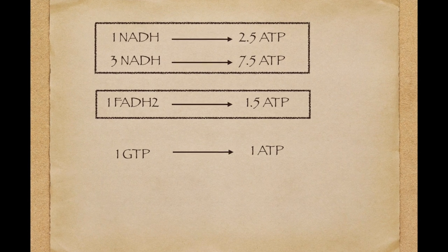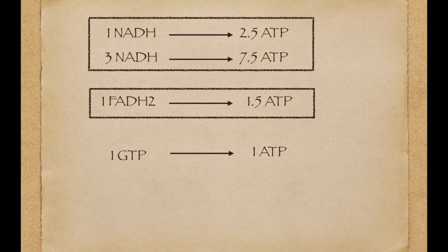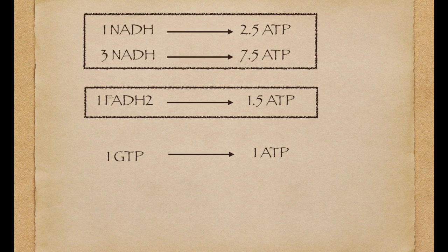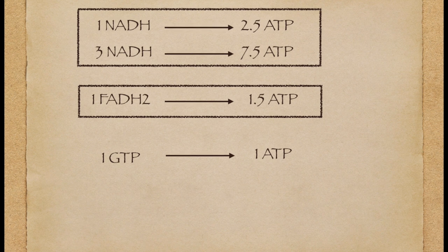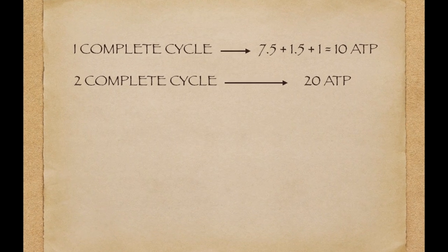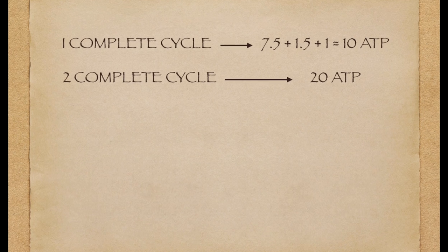And one GTP equals one ATP. Finally, one cycle can produce 10 ATP and two cycles can produce 20 ATP.